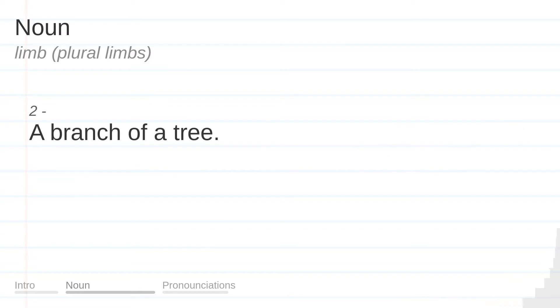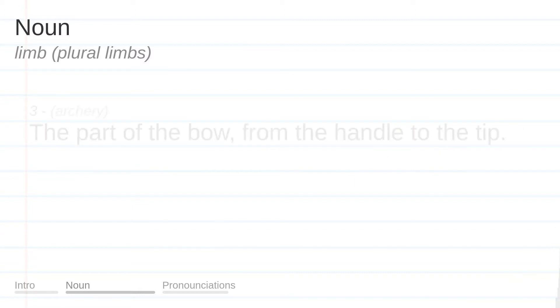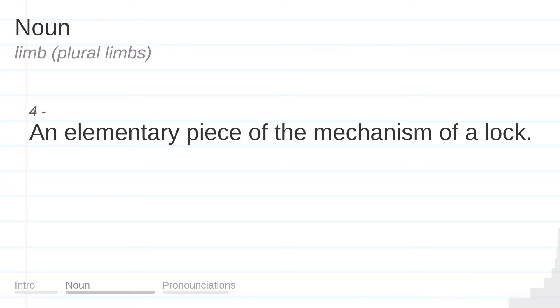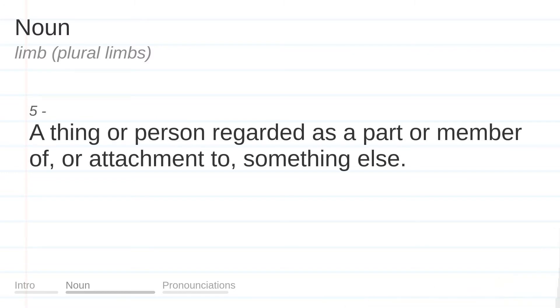A branch of a tree. The part of the bow, from the handle to the tip. An elementary piece of the mechanism of a lock. A thing or person regarded as a part or member of, or attachment to, something else.